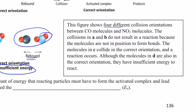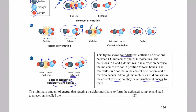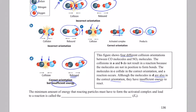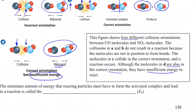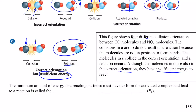This figure shows four different collision orientations between CO and NO₂. The collisions in A and B don't result in a reaction because the molecules are not properly oriented to form bonds. In C they collide with correct orientation and sufficient energy, so a reaction occurs. In D they have correct orientation but insufficient energy. The minimum energy reactant particles must have to form the activated complex is called the activation energy.